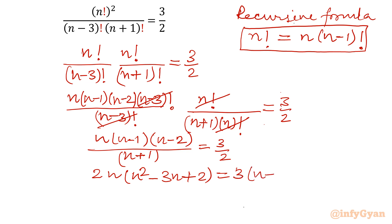Now expand this, open this bracket. So I will write 2n cube minus 6n square plus 4n equal to 3n plus 3. If I will take all the terms to the left, then it will form our cubic equation 2n cube minus 6n square plus n minus 3 equal to 0.